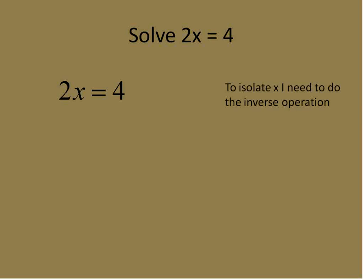The first thing you need to do is isolate x by itself using inverse operations. To get the variable by itself, you have to do the inverse operation. In this case, it's 2 times x, so the inverse operation would be division, dividing by the coefficient of 2. 2 divided by 2 is 1. 1 times x leaves us with just x on the left side, and 4 divided by 2 is 2.